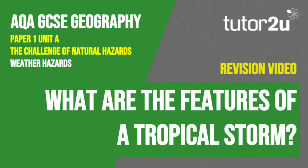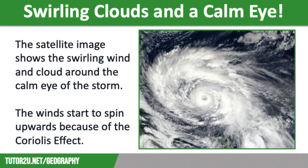Welcome to this Tutor2U revision video that looks at the features of a tropical storm. This is part of Paper 1, Unit A, The Challenge of Natural Hazards. The photo on the screen is a satellite image that shows a swirling wind and cloud around the calm eye of the storm.